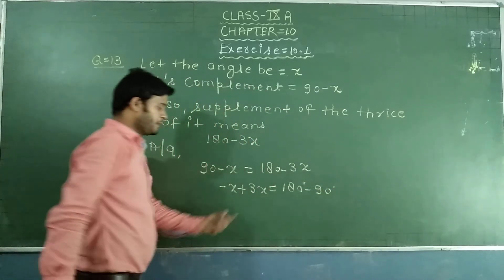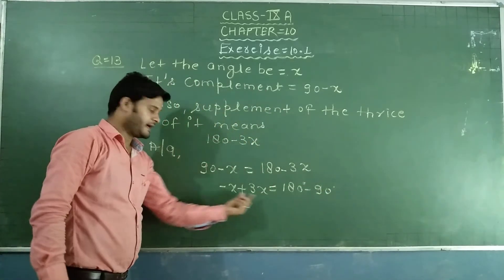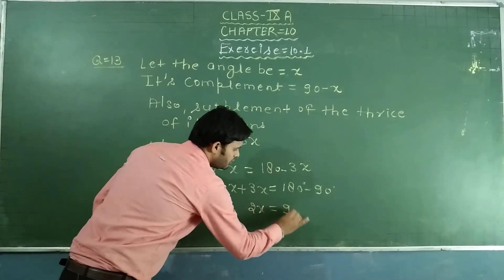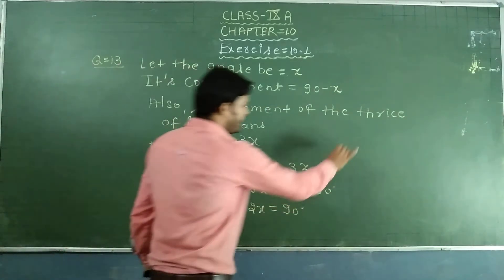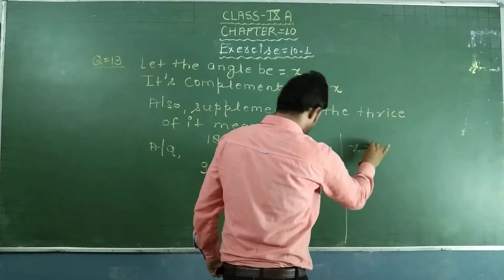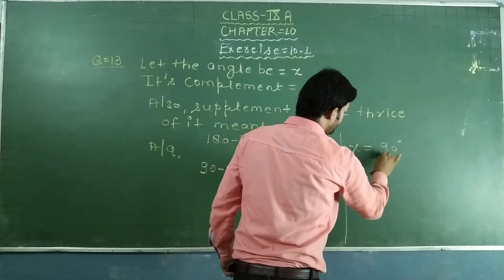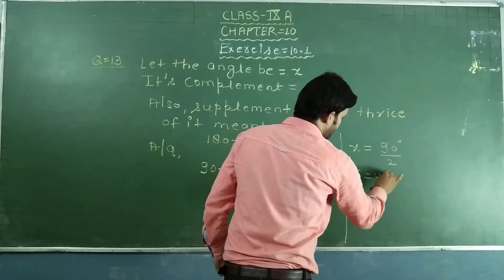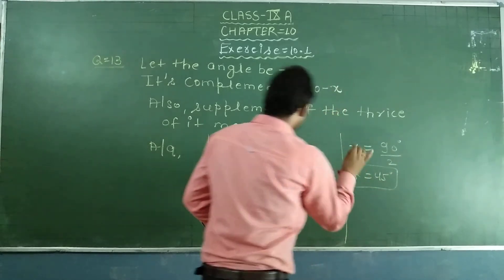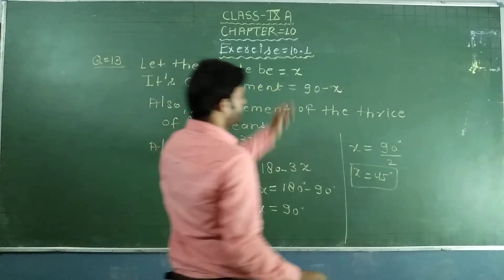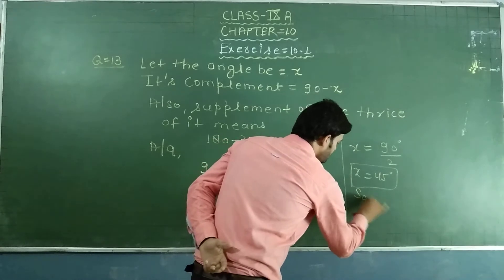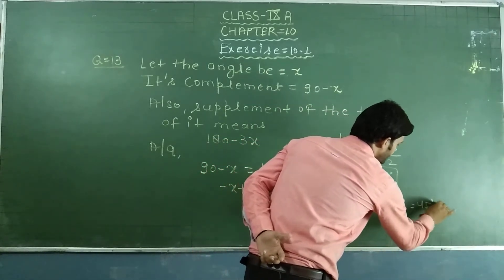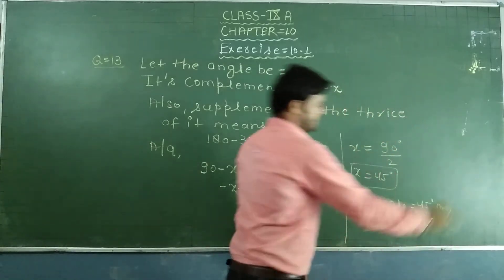Plus 3x and minus x equals 2x, and 2x equals 90. So x equals 90 divided by 2, which equals 45 degrees. The angle equals 45 degrees. That is the answer.